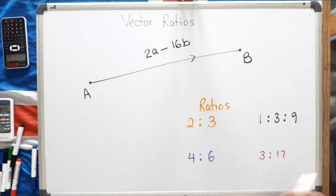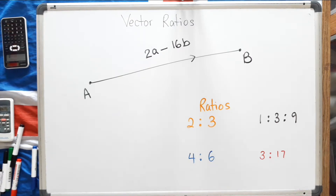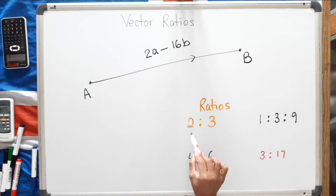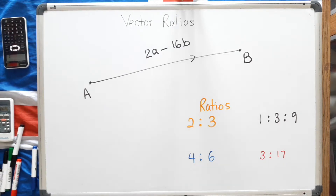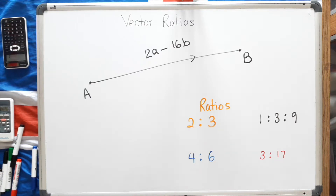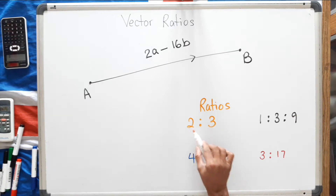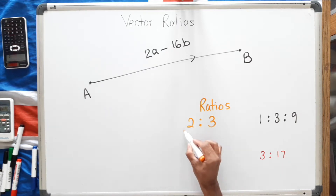I have four ratios on the board here. Let's start off with the orange one — ratio 2 to 3. Ratios are just a different way of writing a fraction. When you see the ratio 2 to 3, you don't see a fraction because a fraction has a numerator and a denominator. You'll notice all the denominators are missing, so how do you get the denominator? It's really simple — just add all the numbers in the ratio. So 2 plus 3 is 5.